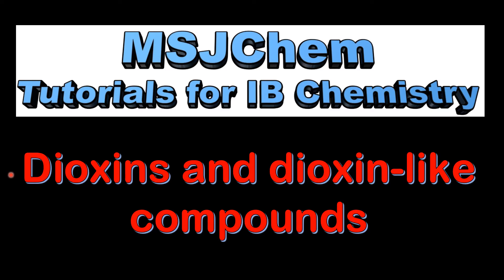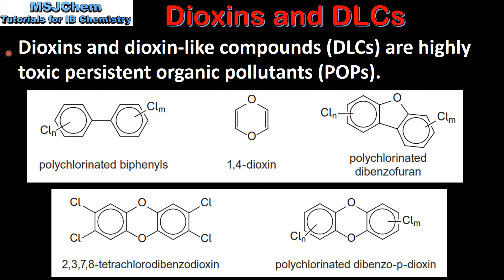This is MSJChem. In this video I will be looking at dioxins and dioxin like compounds. Dioxins and dioxin like compounds are highly toxic persistent organic pollutants. Here we can see the structures of dioxins and dioxin like compounds that can be found in section 31 of the data booklet.